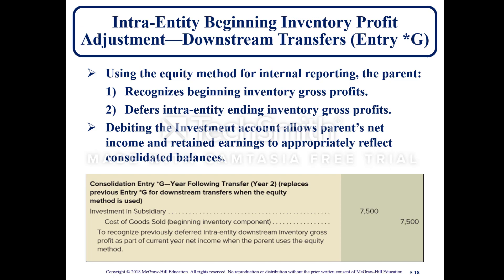For a downstream transfer entry *G using the equity method for internal reporting, the parent recognizes the beginning intra-entity gross profits and defers the intra-entity ending inventory gross profits. Debiting the investment account allows the parent's net income and retained earnings to properly reflect the consolidated balances. Here you have a debit to investment in subsidiary and a credit to cost of goods sold to recognize the previously deferred intra-entity downstream inventory gross profit as part of the current year net income when the parent uses the equity method.